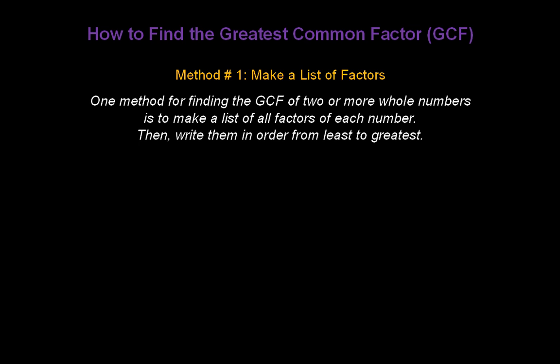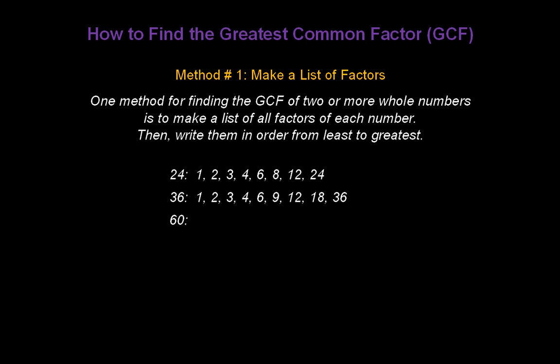If I wanted to find the greatest common factor of 24, 36, and 60, I would start by writing out all factors of 24, order them from least to greatest, and I would have this list. I'd do the same thing with 36, and finally take all factors of 60, put them in order from least to greatest, and I would end up with this list of factors.